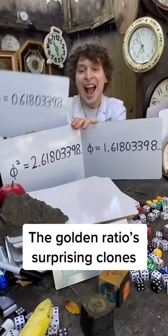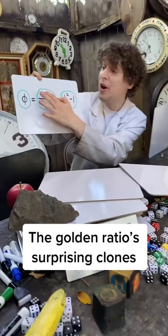The golden ratio happens to be the number that's equal to one divided by itself plus one, or itself squared minus one.